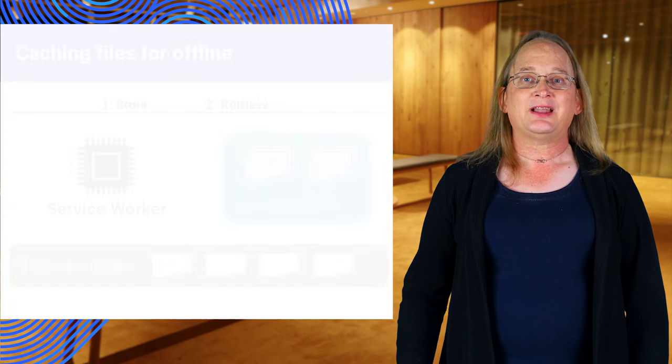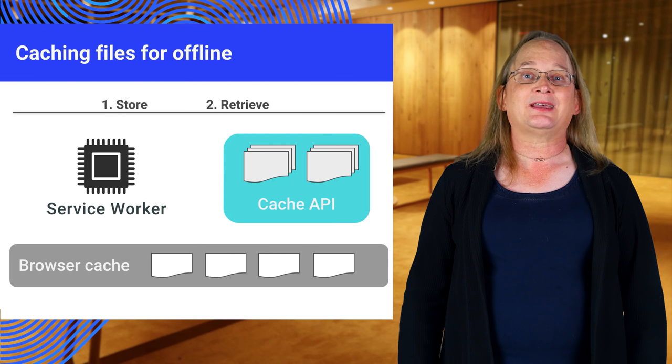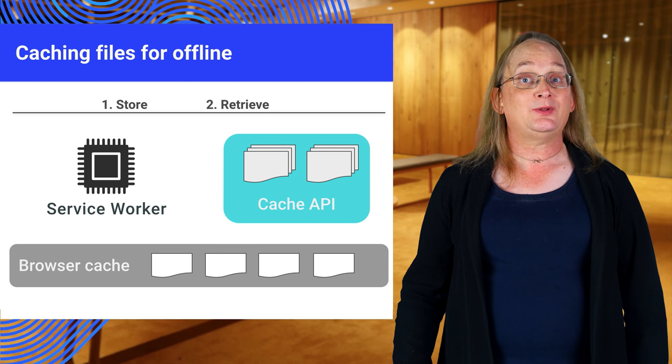One of the main features of progressive web apps is their ability to work even when offline. We're going to walk through an example of converting a static site for offline use, then you get to do it yourself. But let's take a step back and ask: why do this?